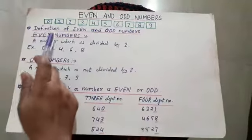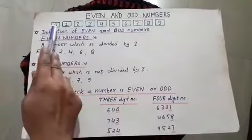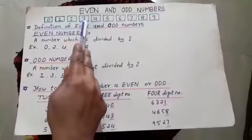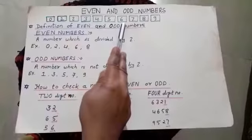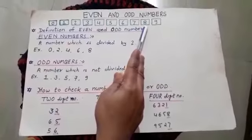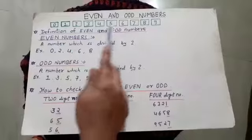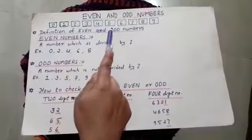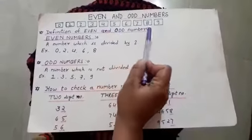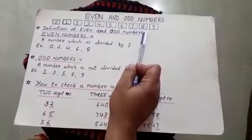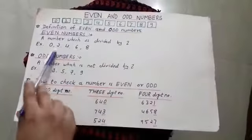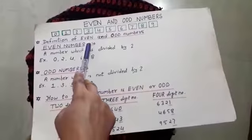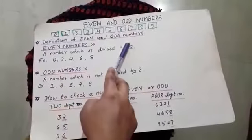Children, you know these numbers: 0, 1, 2, 3, 4, 5, 6, 7, 8, 9. We don't know which of these numbers are even or which are odd. First of all, we will learn the definition of even numbers and odd numbers.